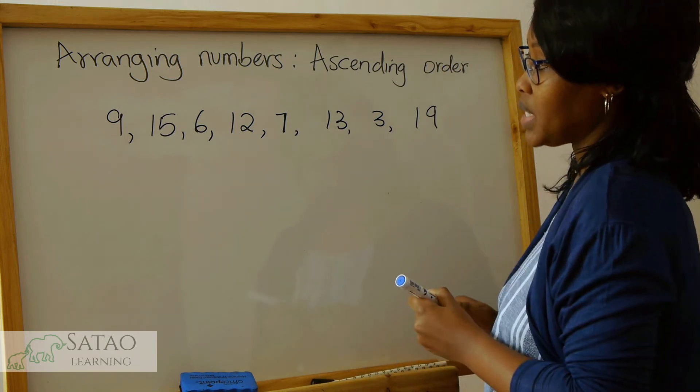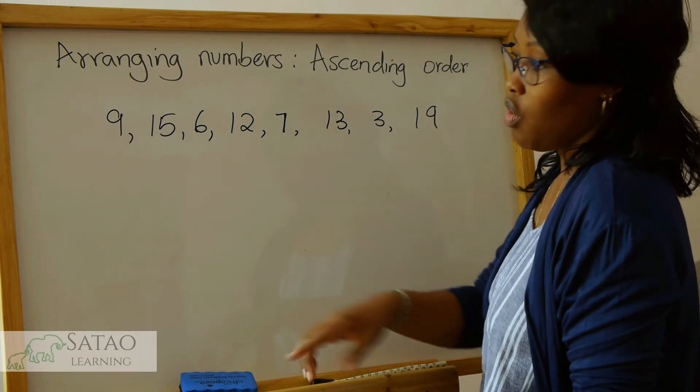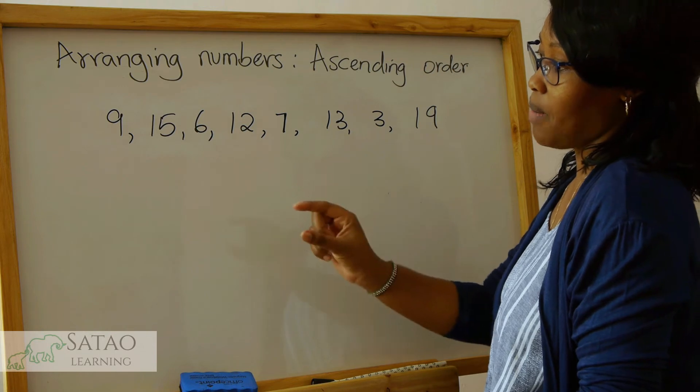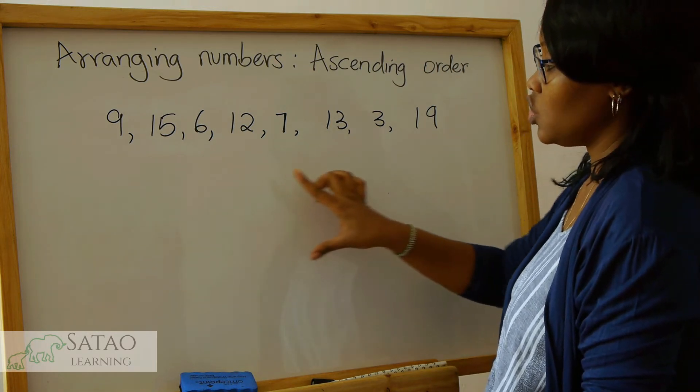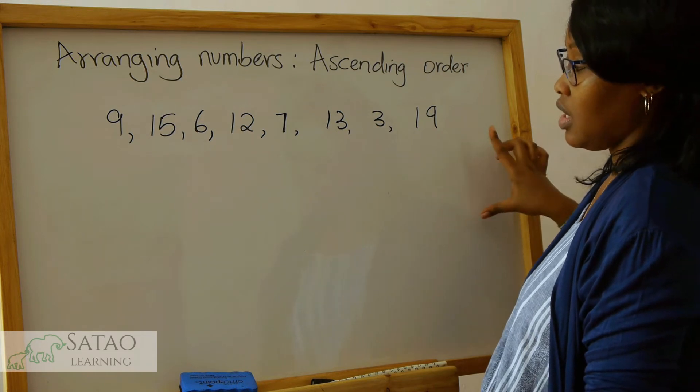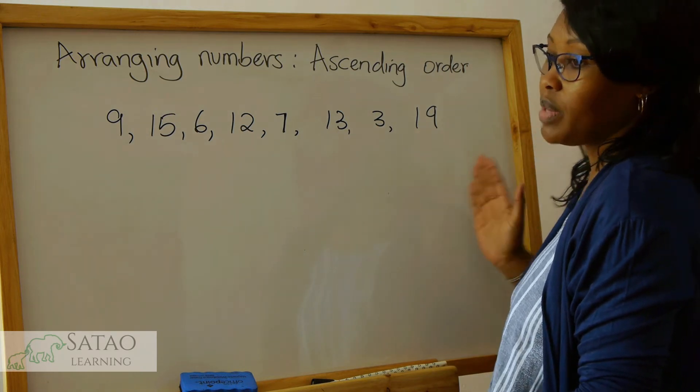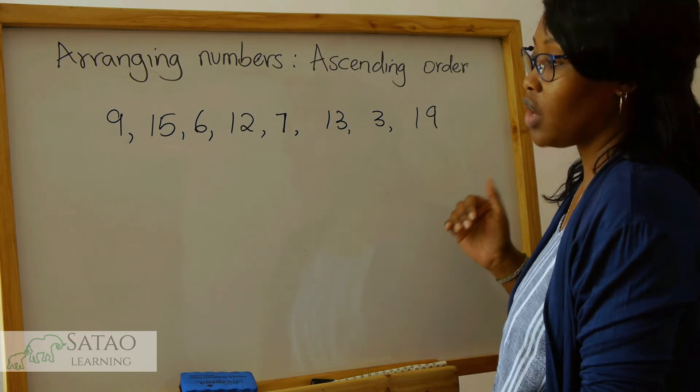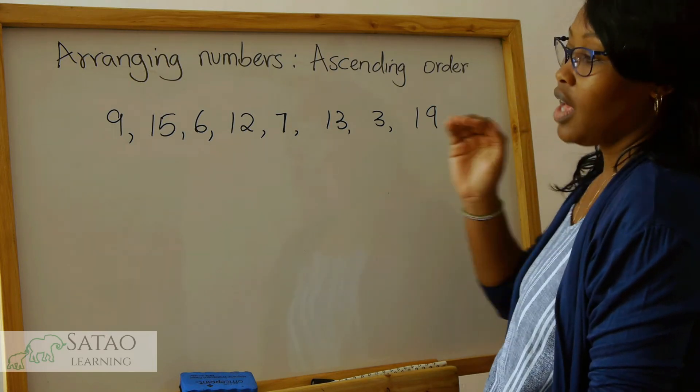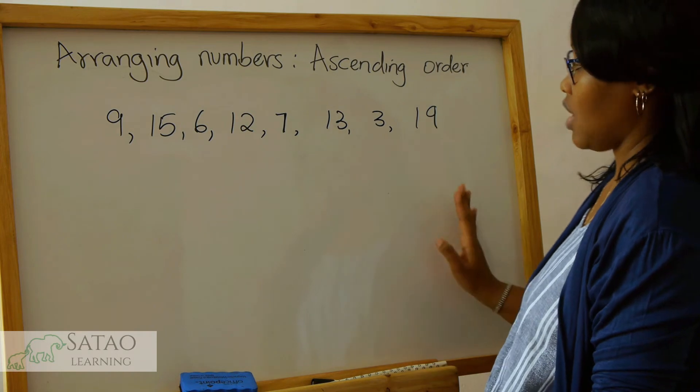Remember that when we count our numbers from 1, 1 is usually the smallest number. Then we continue until wherever we can reach, maybe let's say 20. 20 will be the biggest number if we are counting between 1 and 20, and then 1 will be the smallest number.